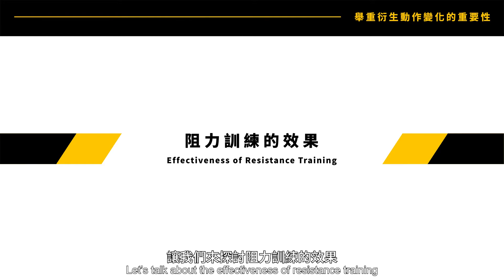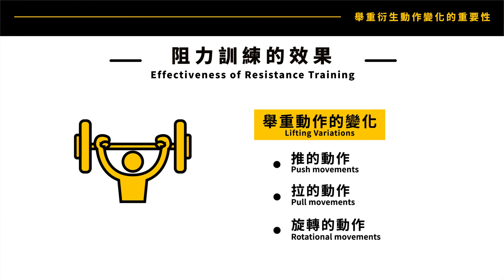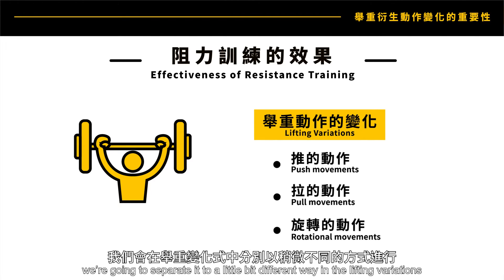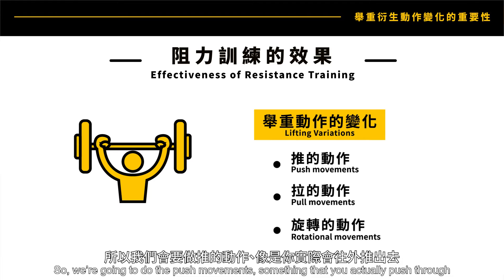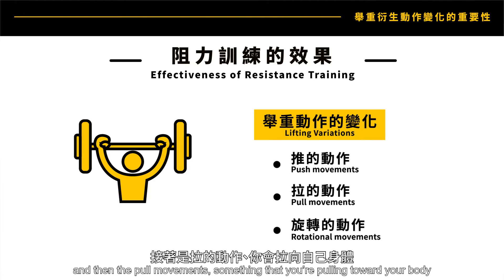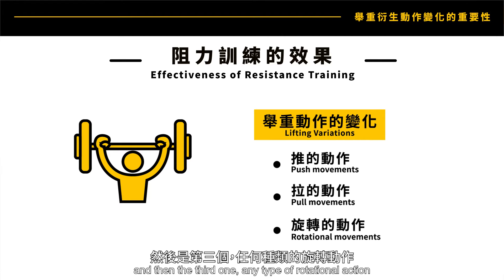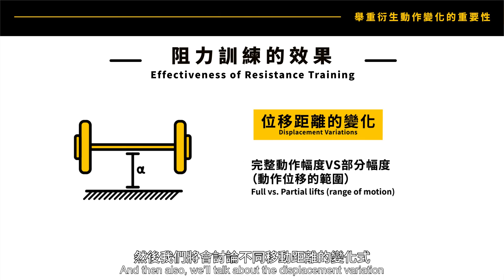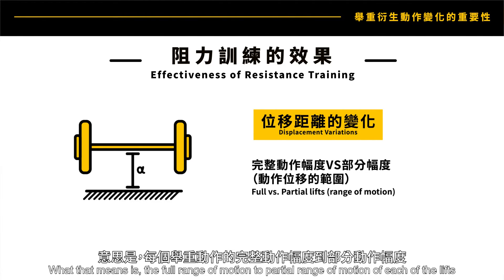Let's talk about the effectiveness of resistance training. Instead of body-part-specific weight training, we separate it into lifting variations. There's the push movement — something you push through — and the pull movement — something you pull toward your body — and then any type of rotational action. So we have three different lifting variation categories. We'll also talk about displacement variation.